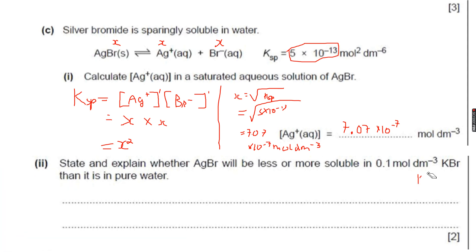So if I have to write an equation just to explain it to you, KBr dissolves completely to give K plus aqueous plus Br negative aqueous. So now, we have an ion in common. In AgBr and in KBr, we have an ion in common. We have the Br negative ion.